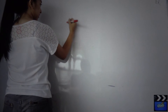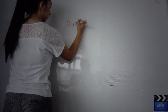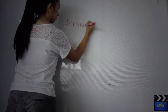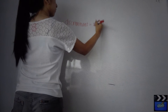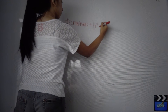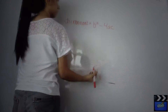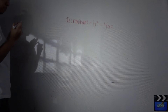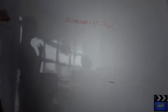First, compute the discriminant. The discriminant is b squared minus 4ac. You need to remember this formula.